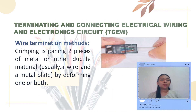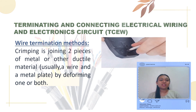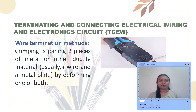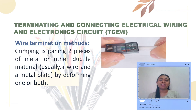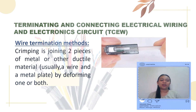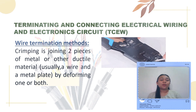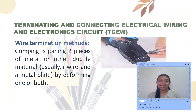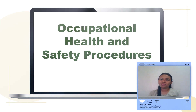Another wire termination method is crimping. Crimping is joining two pieces of metal or other ductile material — usually a wire and a metal plate — by deforming one or both. This is usually done when making a LAN or Ethernet cable. After learning the basics in terminating and connecting wires and electrical circuits, we will now move on to occupational health and safety procedures.